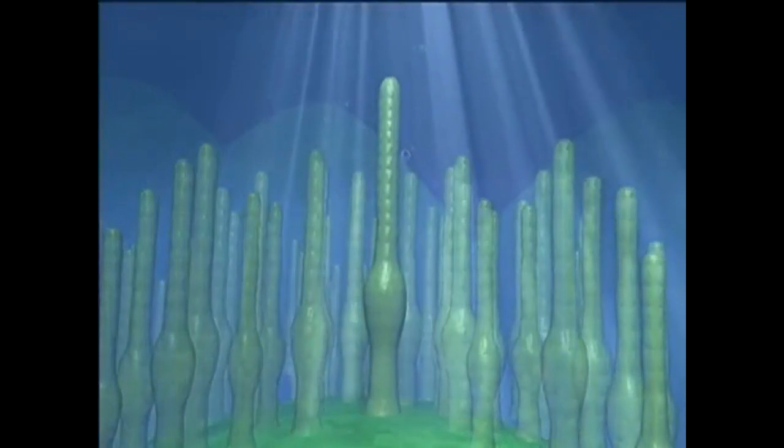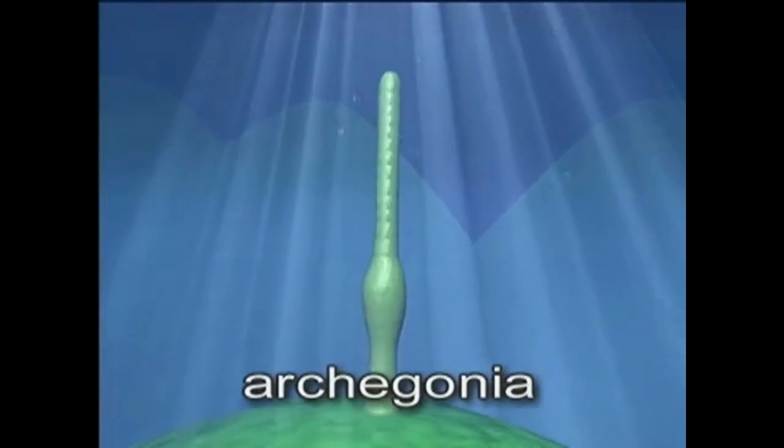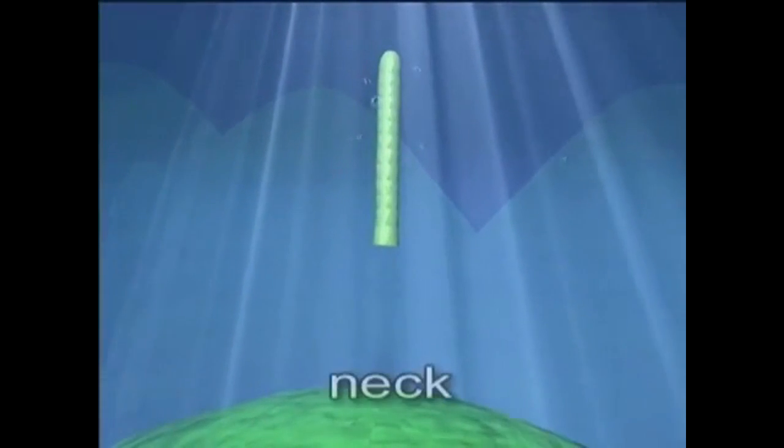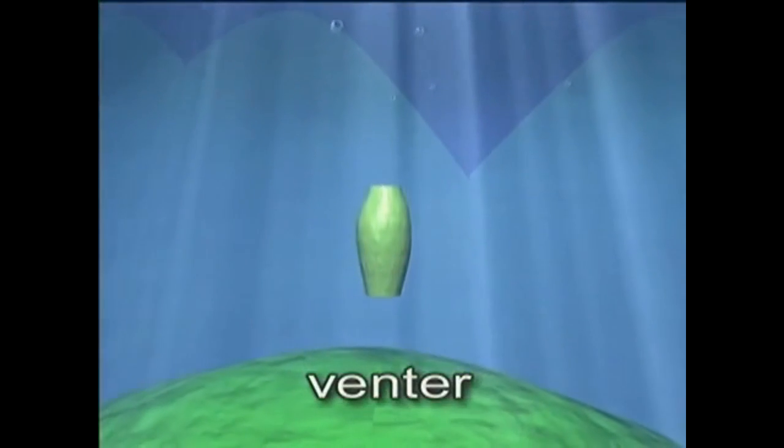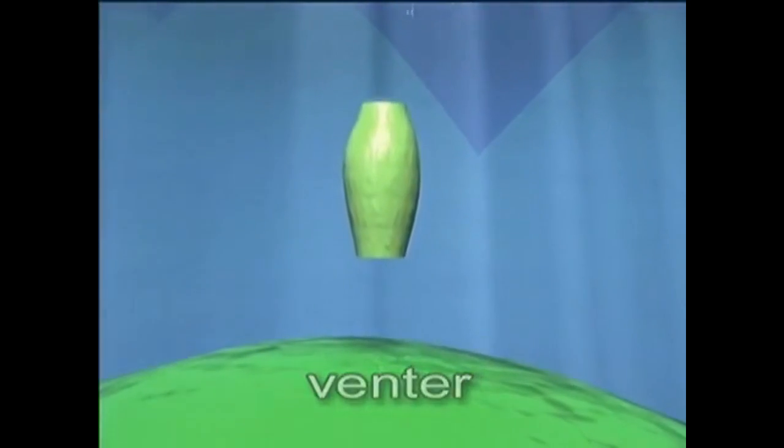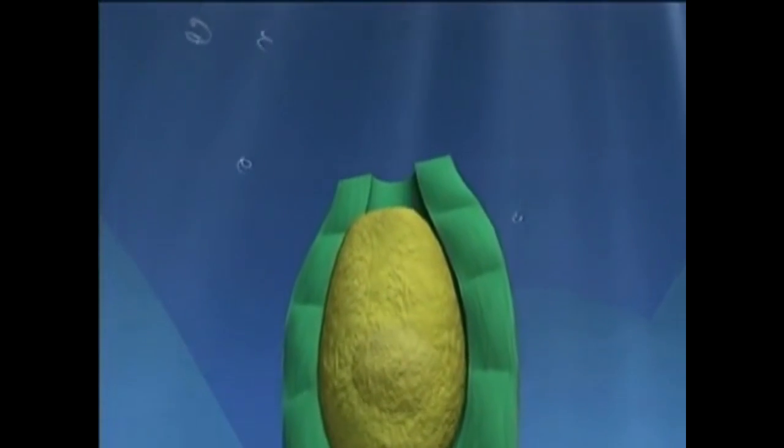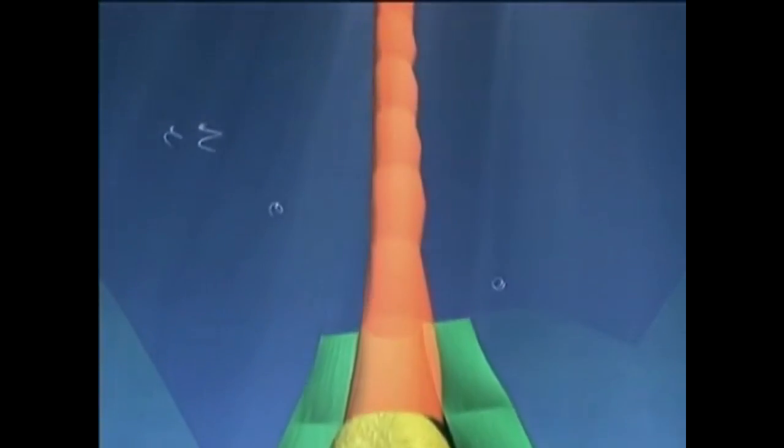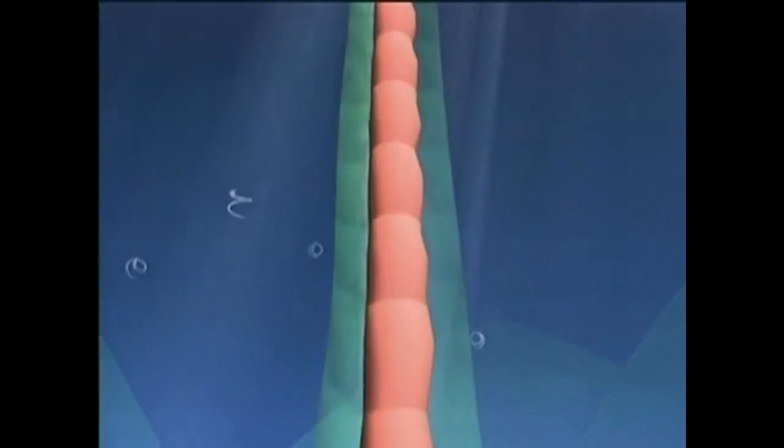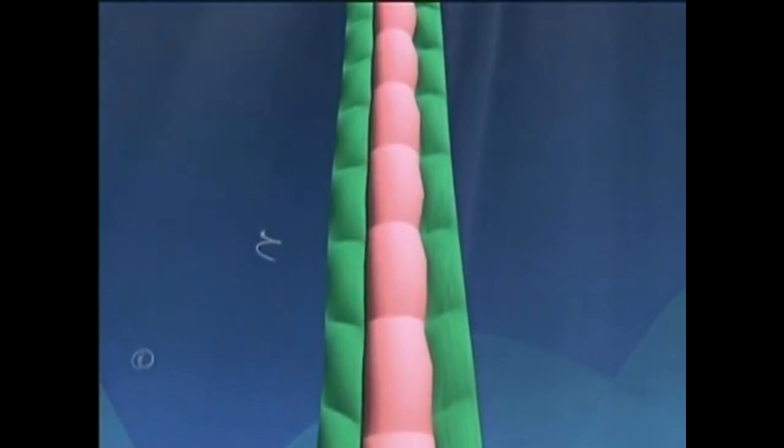At the tip of a female plant, there are numerous reproductive structures known as archegonia. The top of each consists of a slender neck. The middle region contains a chamber called the venter. The base of the archegonium is attached to the moss stem by a stalk. An egg cell is formed inside the venter. Inside the neck, the breakdown of cells forms a central canal containing sperm attractant.